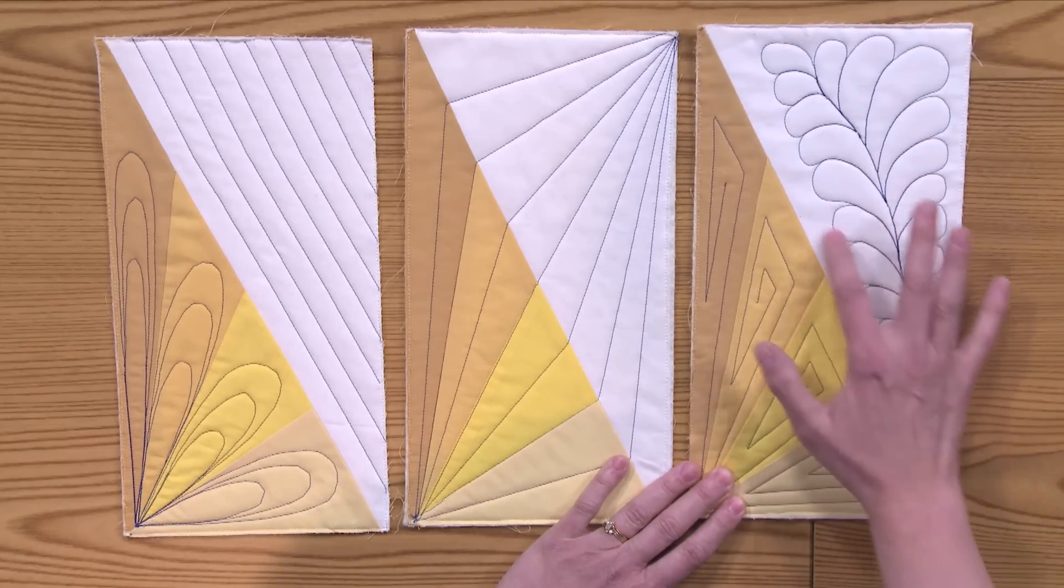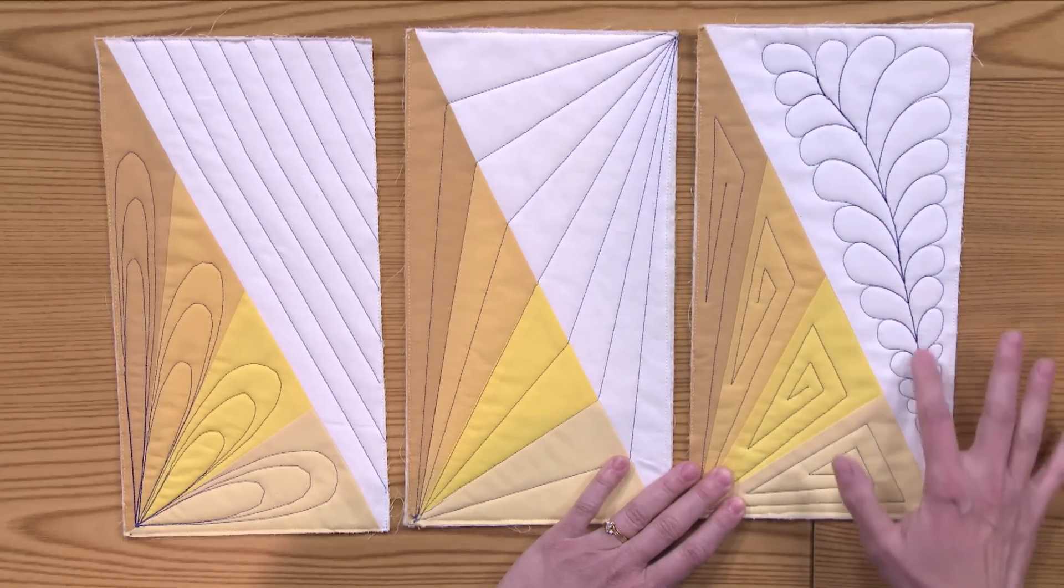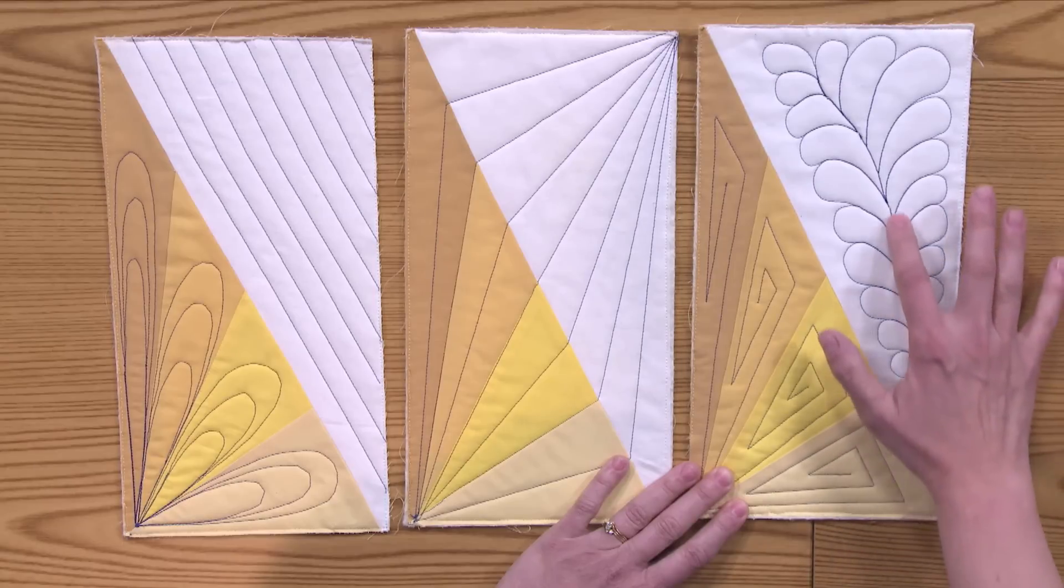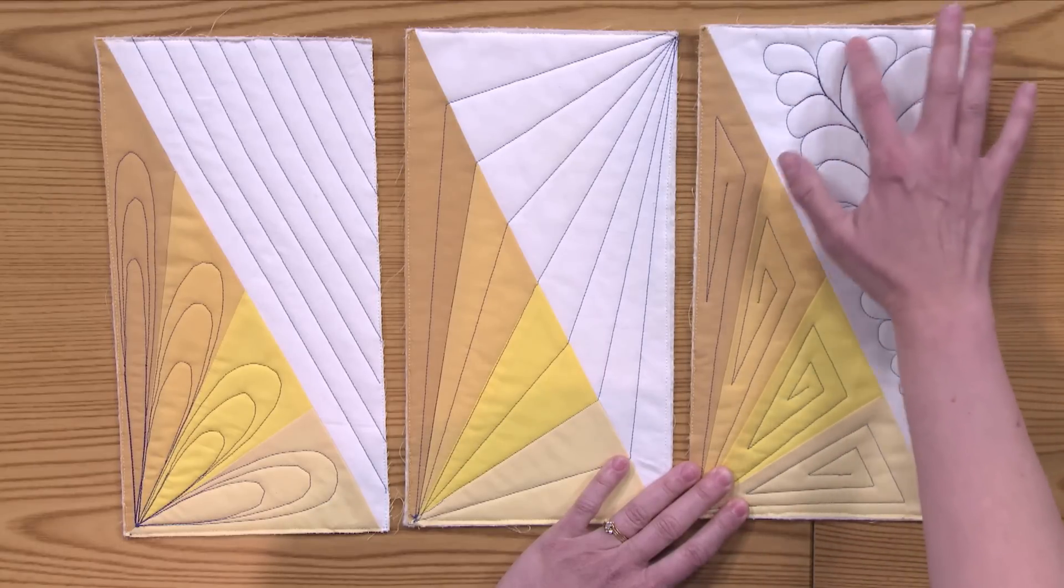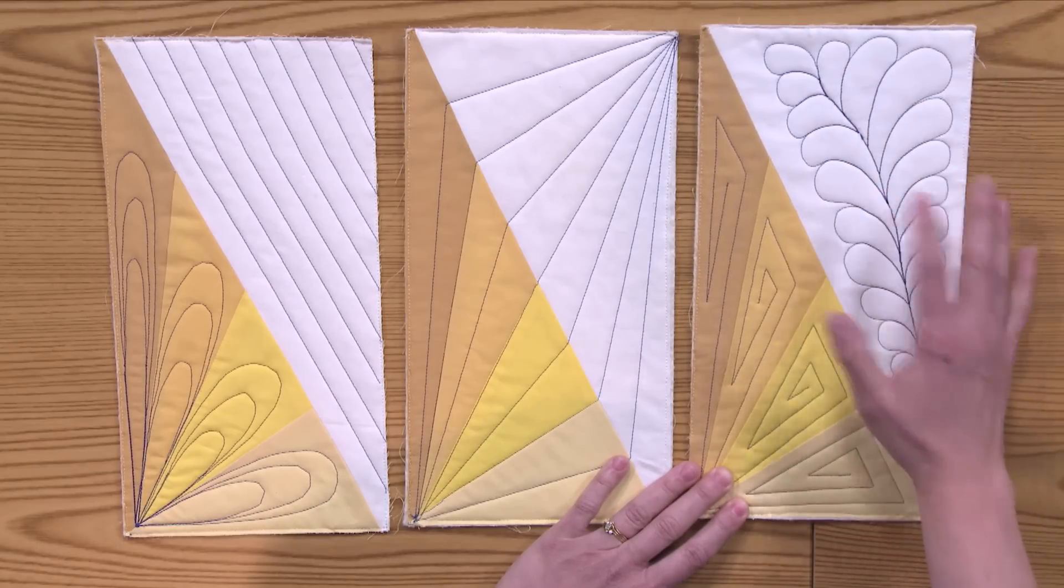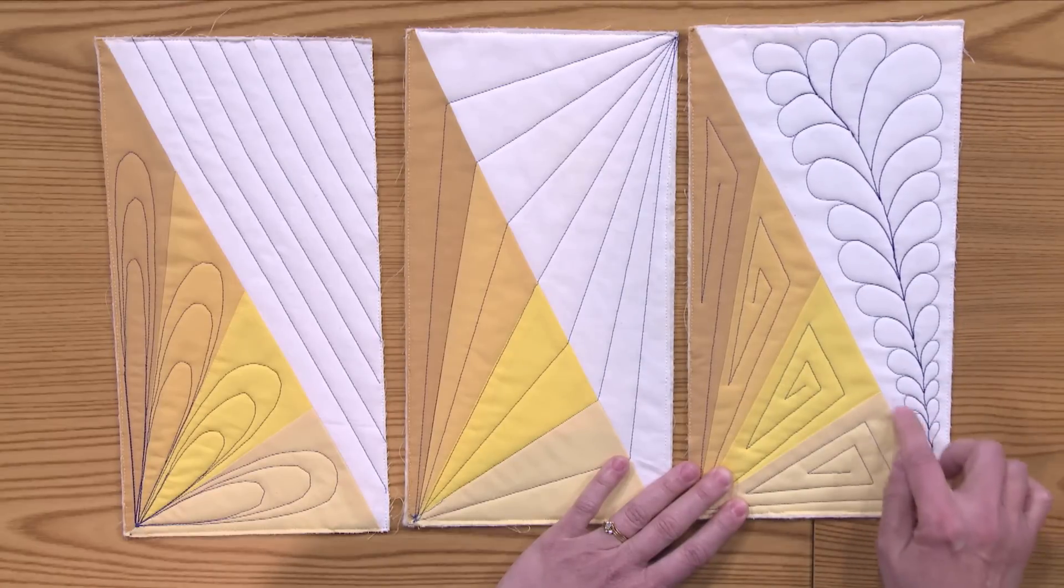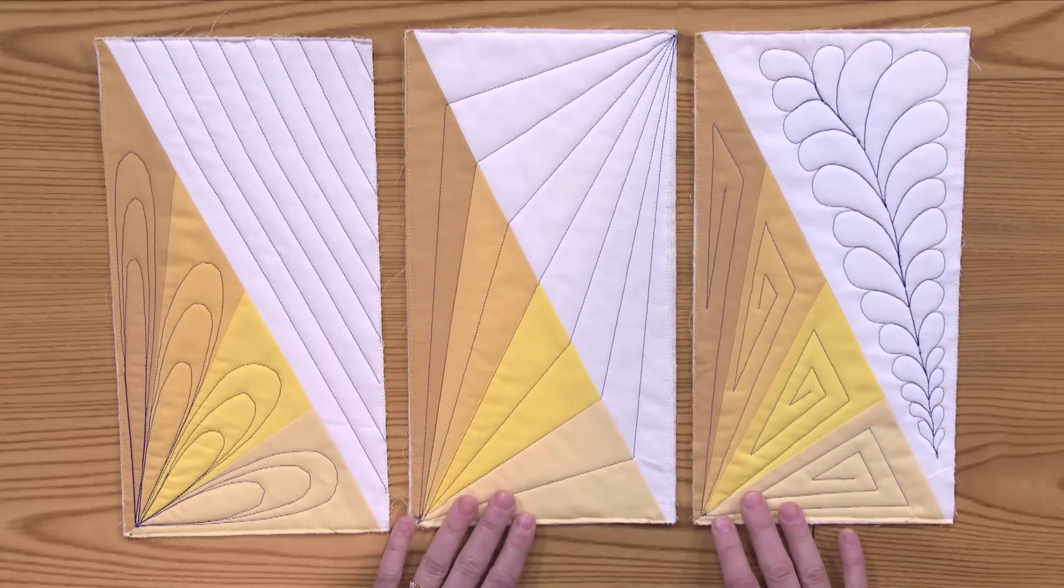Just work your way down on one side, all the way down to the bottom, and then you can follow that line right back up again and go down the other side just like that. Some people like to quilt their feathers from the bottom, and you'll just have to play around with it to see what works best for you.